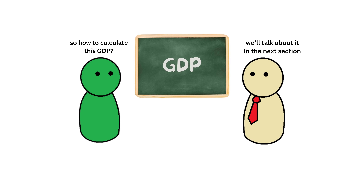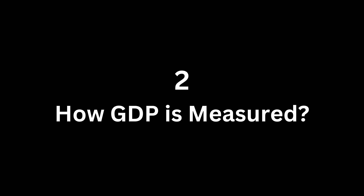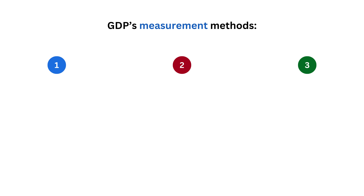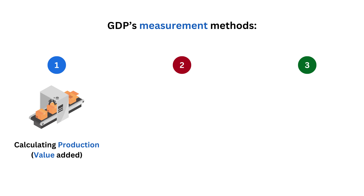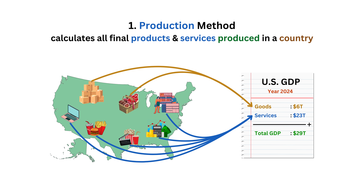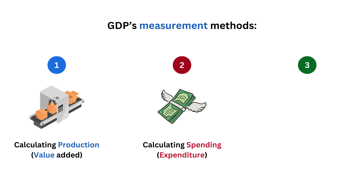Now, how do we calculate GDP? GDP can be calculated using three methods. The first is calculating the production — this method calculates the total value of all final products and services produced in the country. The second is calculating the spending.